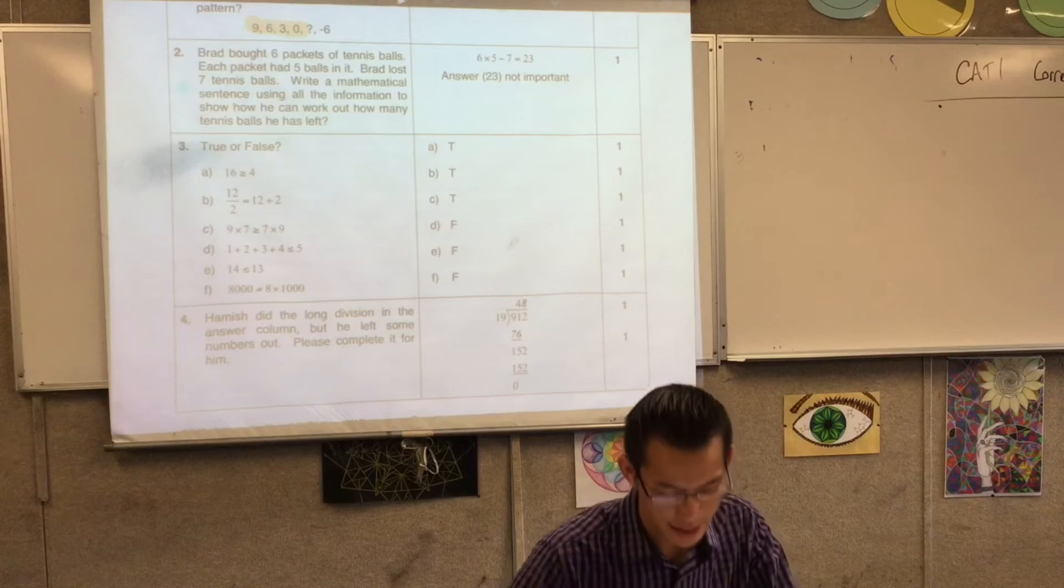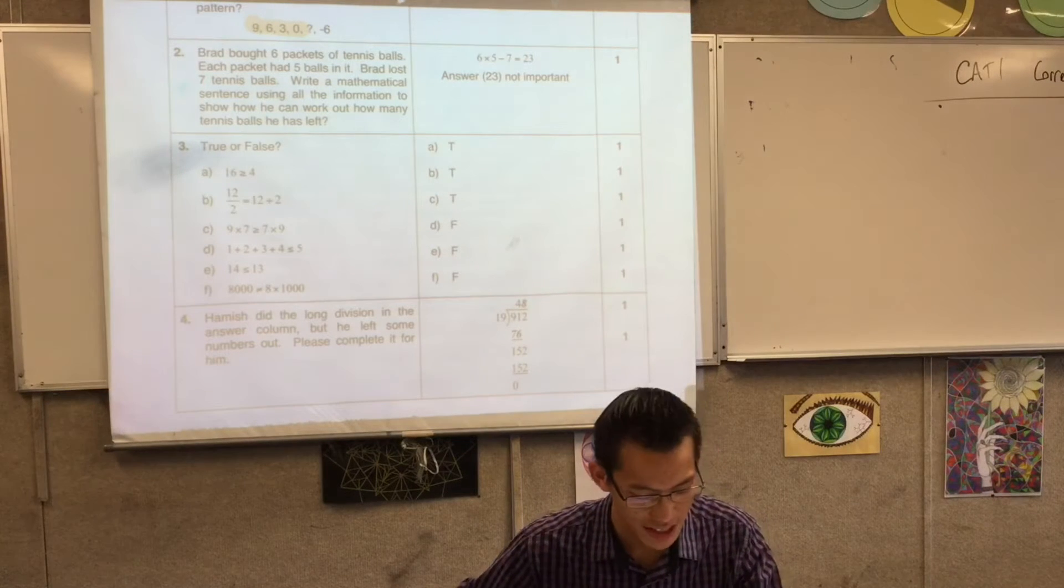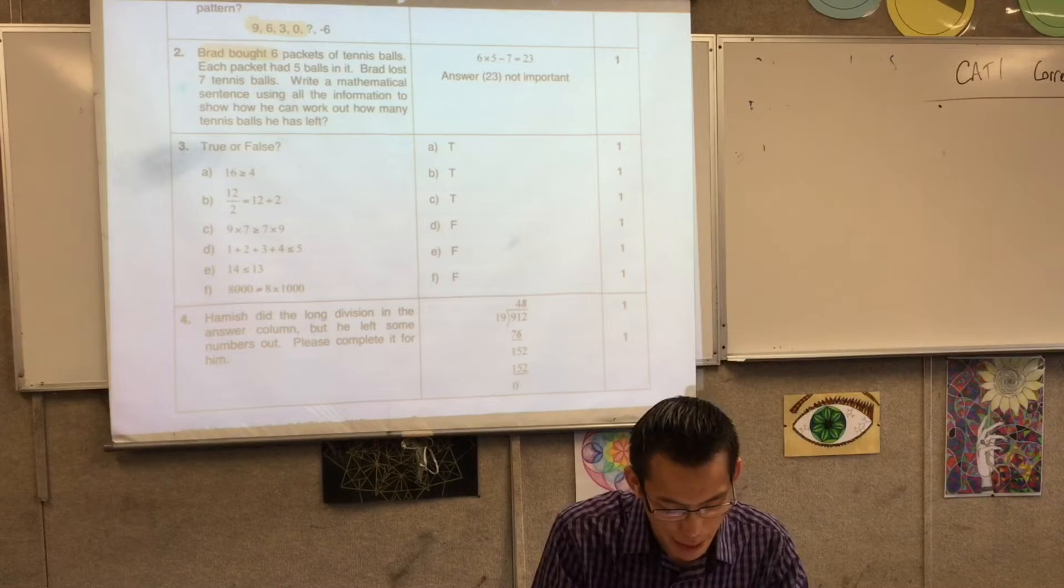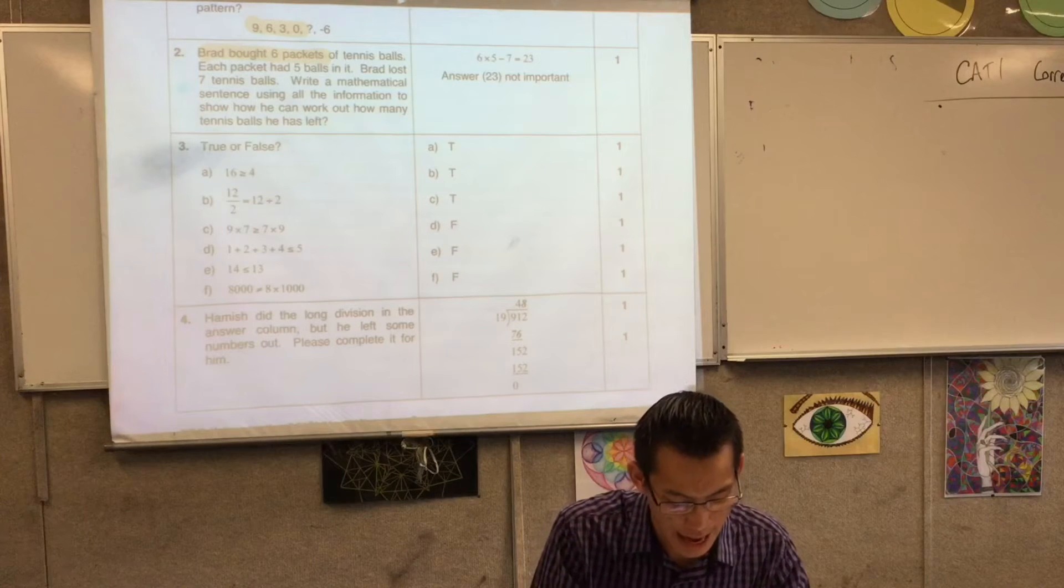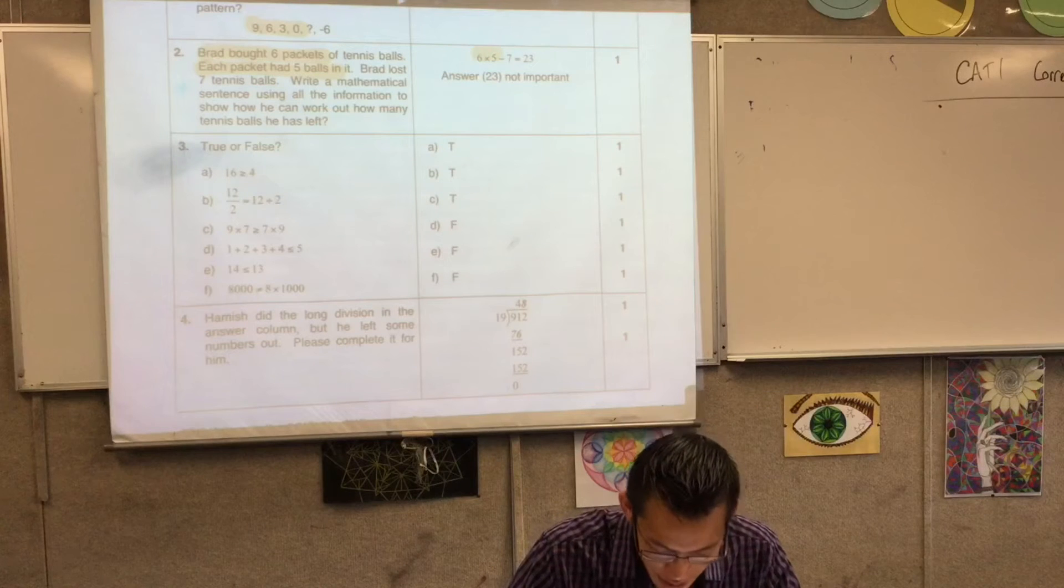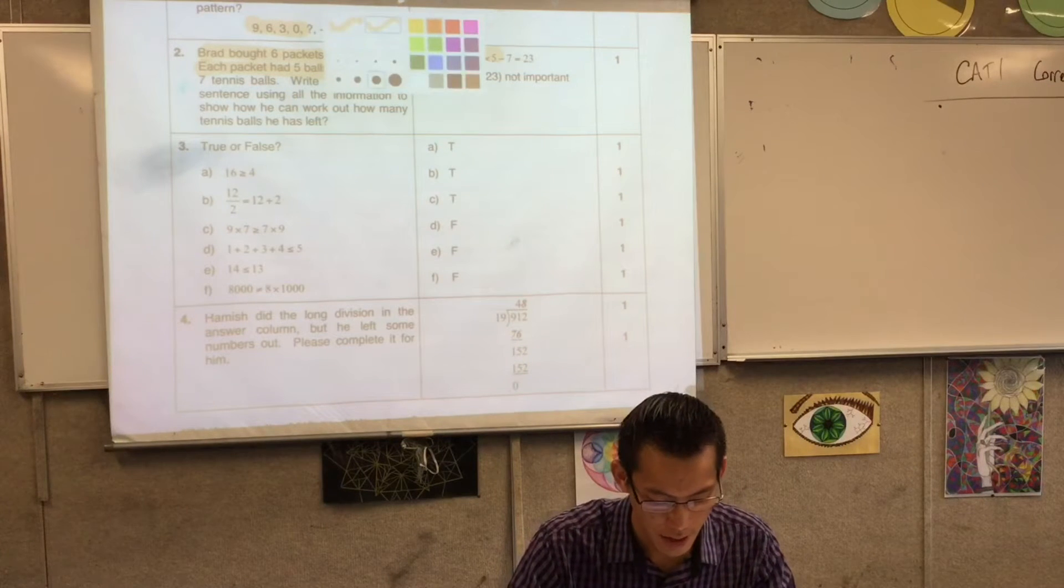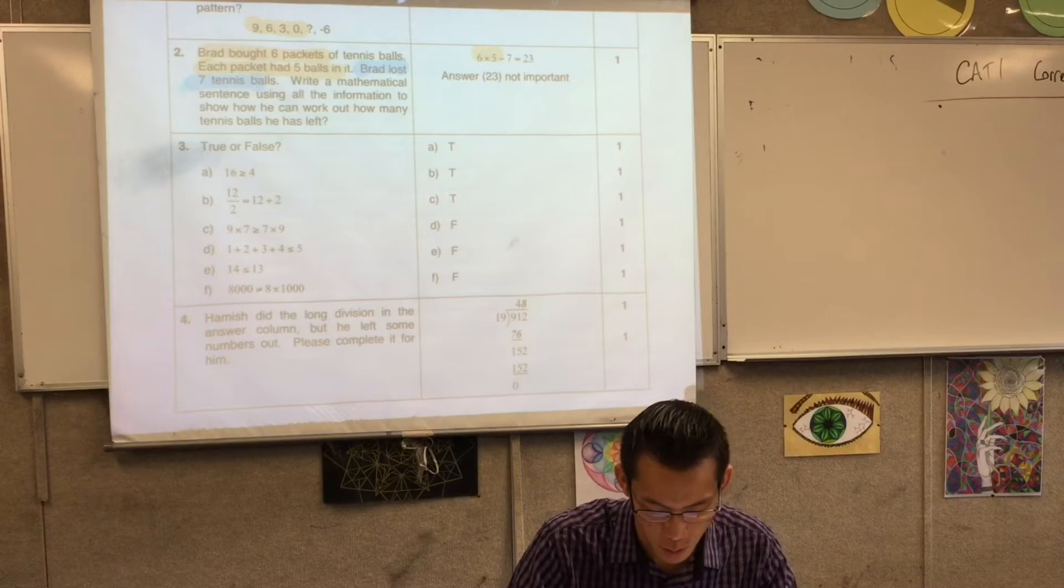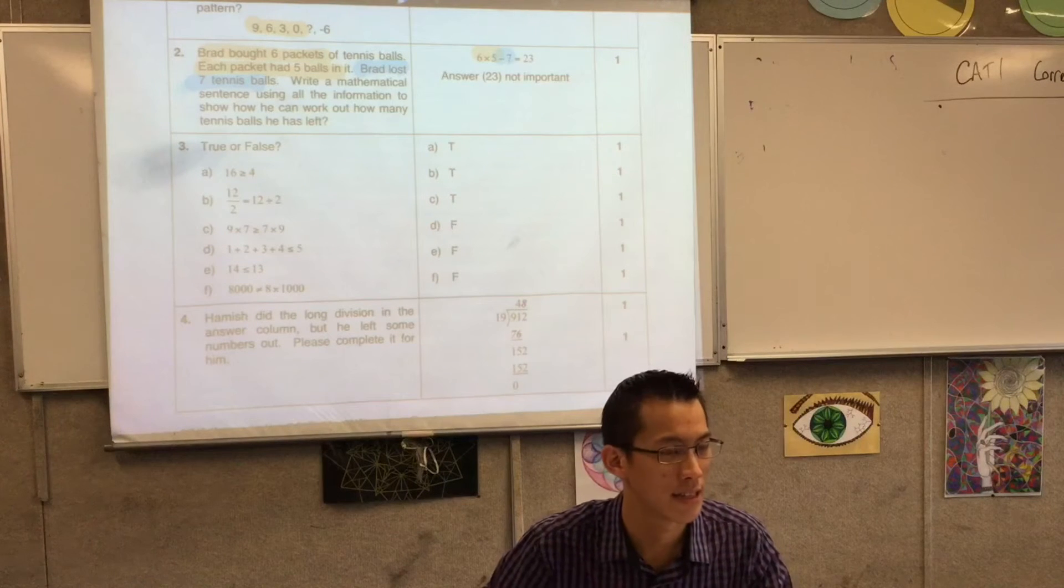When you had a look at this next part, it said write a mathematical sentence. You can see when Brad bought 6 packets of tennis balls and each packet had 5 balls in it, that's where 6 times 5 comes from. Following that, he lost 7 of them, so that's why there is subtraction by 7 in the sentence.